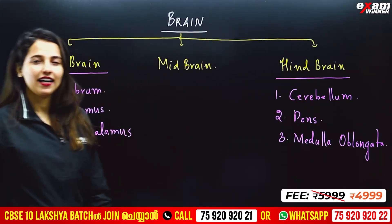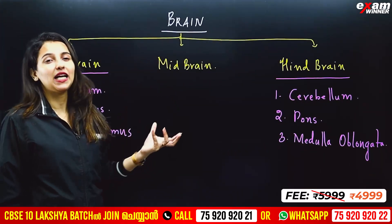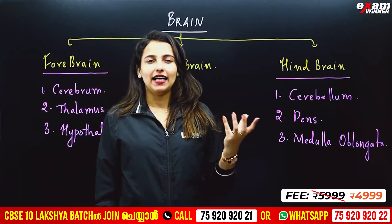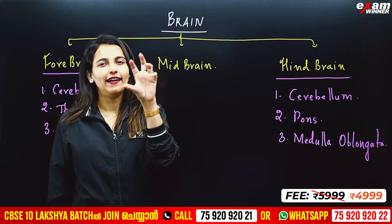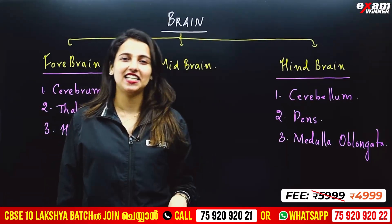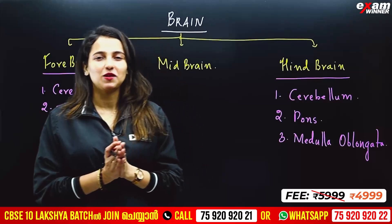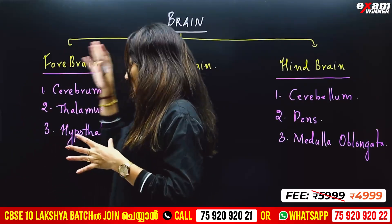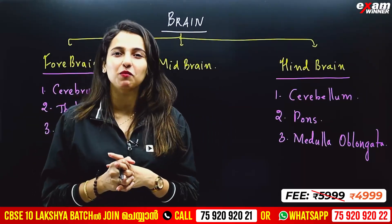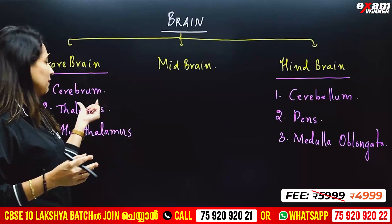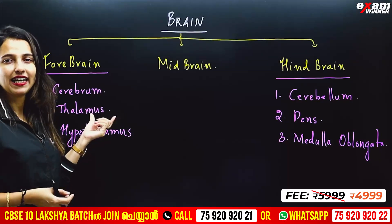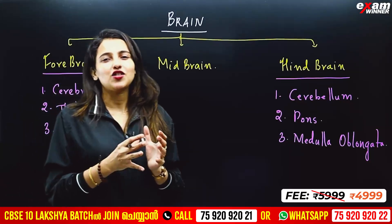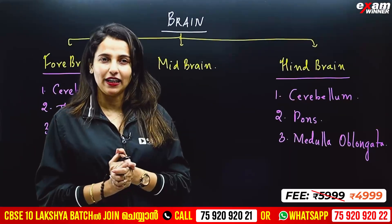Midbrain is a region of the brain. Thalamus and Pons do not have their functions mentioned in detail in the textbook, so we only learn the functions of specific parts.